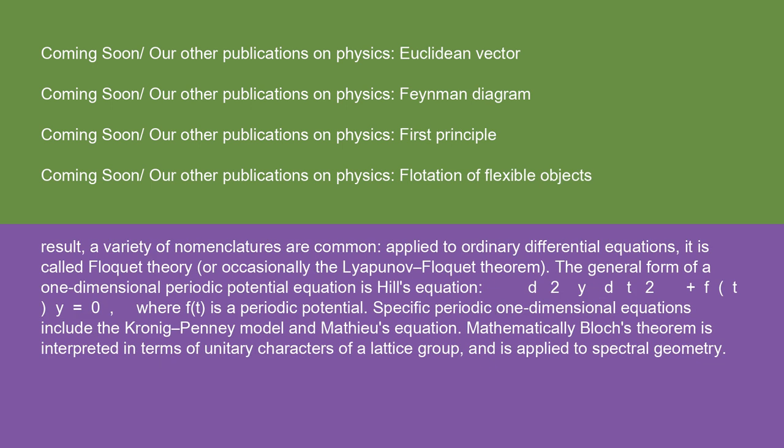Applied to ordinary differential equations, it is called Floquet theory or occasionally the Lyapunov-Floquet theorem. The general form of a one-dimensional periodic potential equation is Hill's equation: d²y/dt² + f(t)y = 0, where f(t) is a periodic potential. Specific periodic one-dimensional equations include the Kronig-Penney model and Mathieu's equation. Mathematically, Bloch's theorem is interpreted in terms of unitary characters of a lattice group and is applied to spectral geometry.